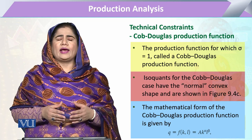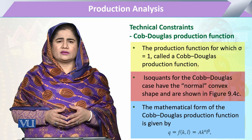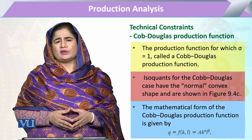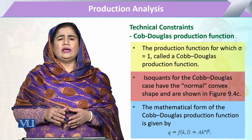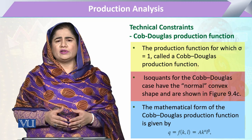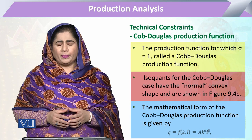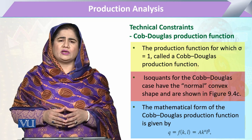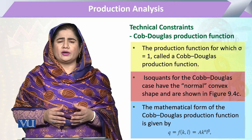The isoquants in the Cobb-Douglas production function are of the normal convex shape that we mostly use in all types of analysis. In other words, the shape of the isoquant in the Cobb-Douglas production function is similar to the indifference curve that we have explained in consumer analysis.